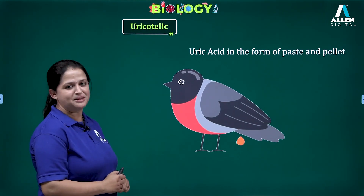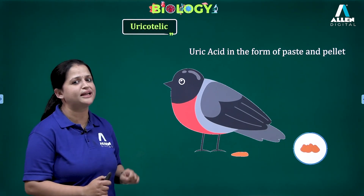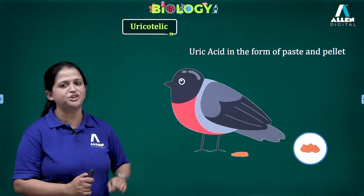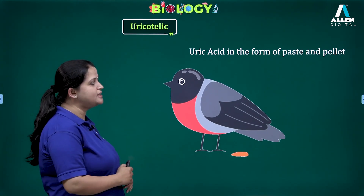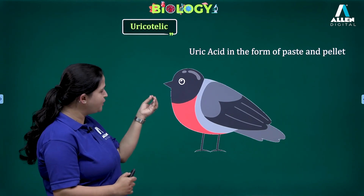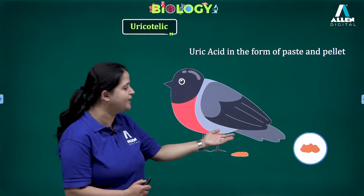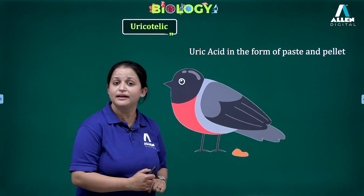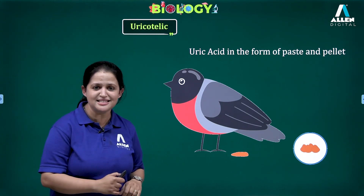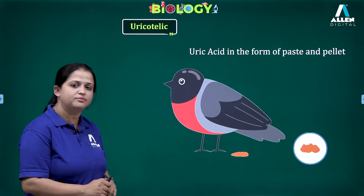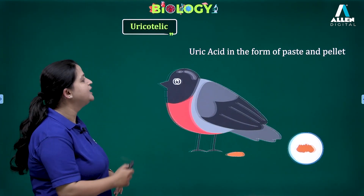In uricotelic animals, uric acid is the least toxic waste material and it is removed with the least amount of water. For example, in birds, uric acid is released in the form of a paste or pellet. In order to remove uric acid, the least amount of water is required. These are the mechanisms followed by ammonotelic, ureotelic, and uricotelic animals.